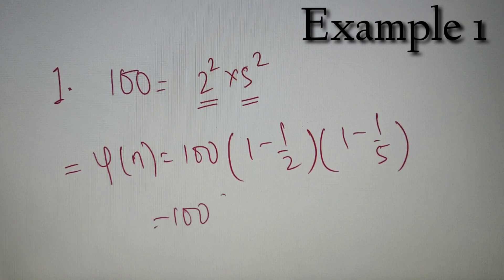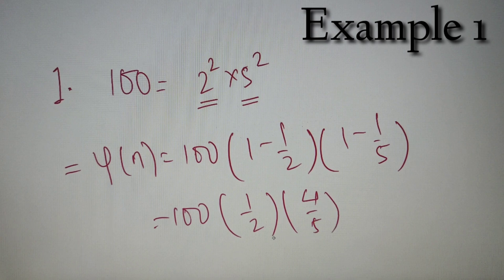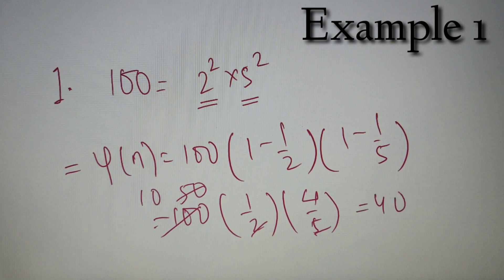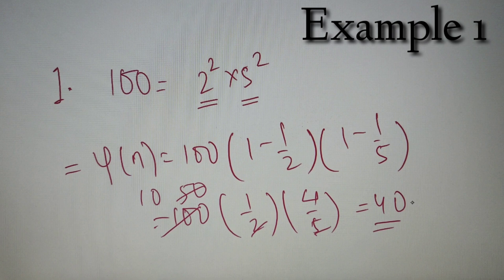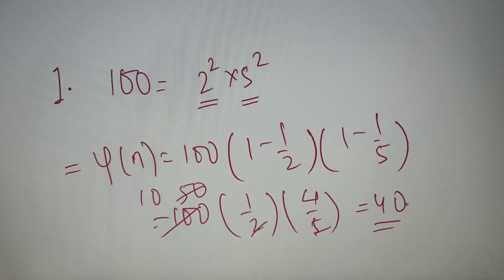Now 1 − 1/2 = 1/2 and 1 − 1/5 = 4/5. You can see that 2 and 100 cancel, and 50 and 5 cancel, so we are left with 40. Therefore φ(100) = 40. So there are 40 different numbers which are co-prime to 100 and less than it. You can see how easy it is to find the Euler's Totient value of any given number.